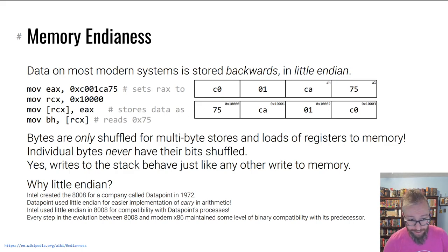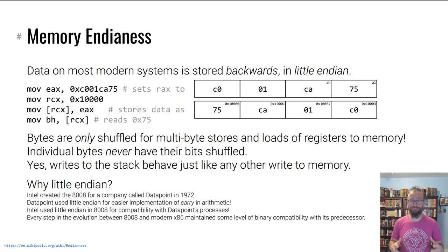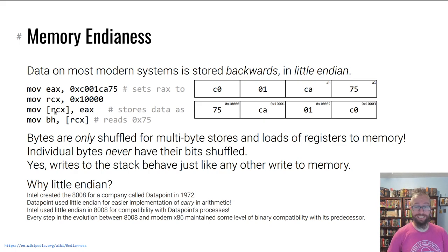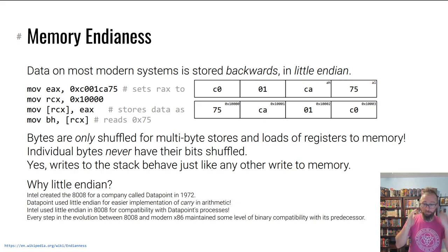On x86 as well as most modern operating systems, data is stored byte-wise backwards — something called little endian. If we set RAX to 'cool cats' and write it to address 0x110000, it ends up backwards in memory. The first byte you'd read would be the last byte of 'cool cats', then continuing backwards. Any time you do a multi-byte write between registers and memory, your data gets flipped. That's the only time this happens.